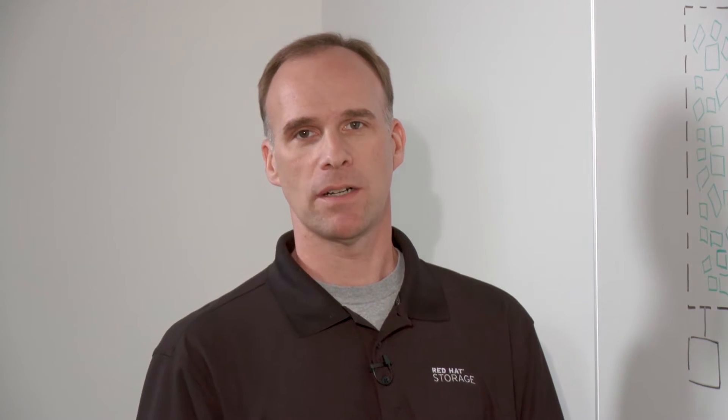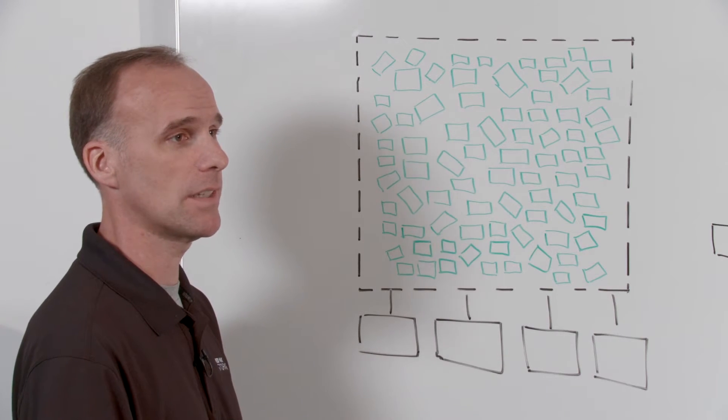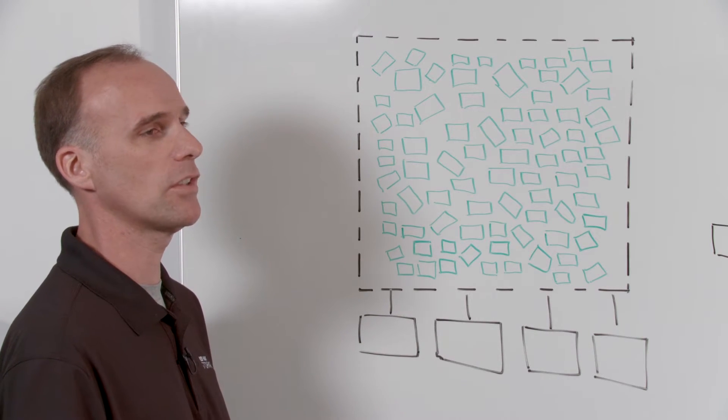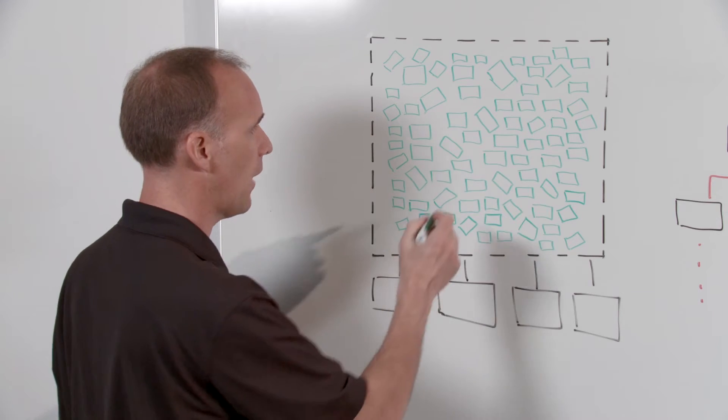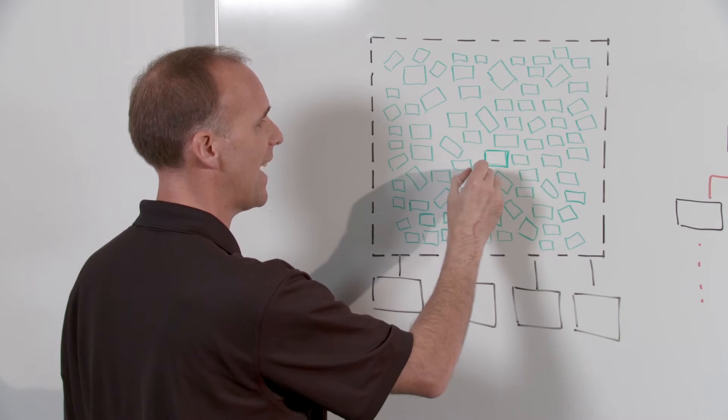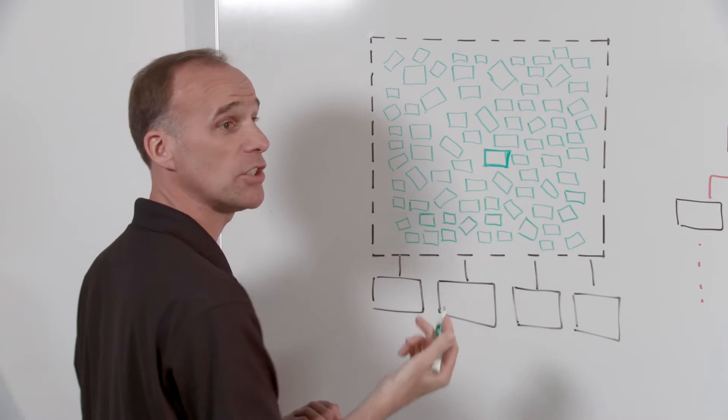So what is an object store, or what is an object for that matter? An object is a piece of data with its associated metadata. Metadata is data about that piece of data — things like how old that piece of data is, when it was last accessed, what size it is, and all sorts of different parameters like that. Those two pieces, the metadata and the data together, is what makes an object.